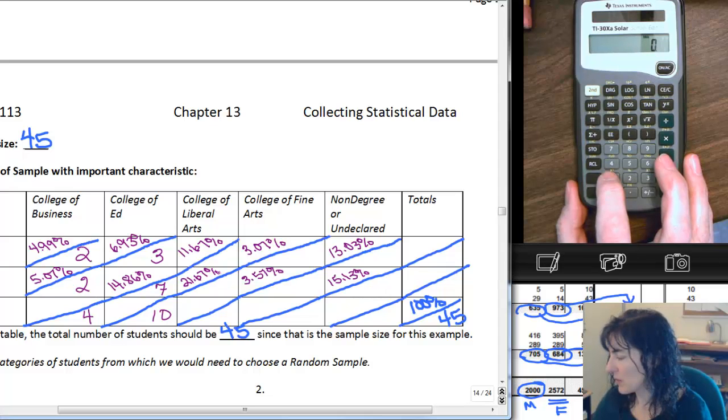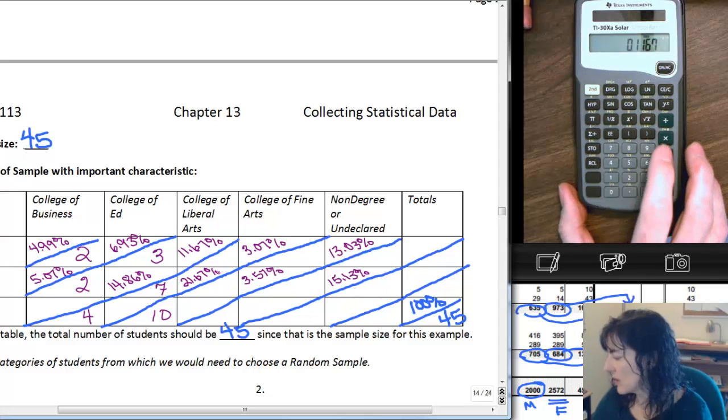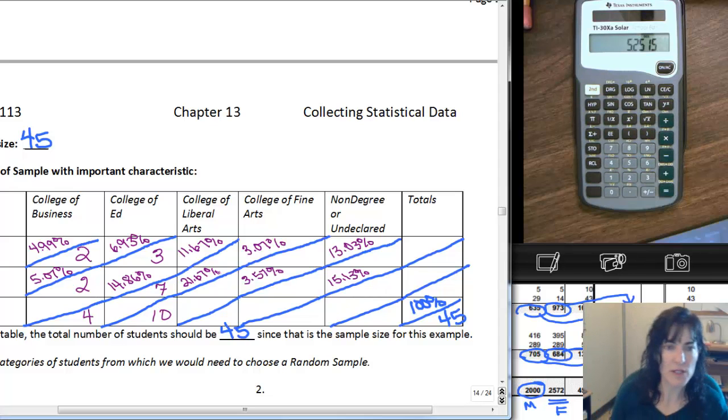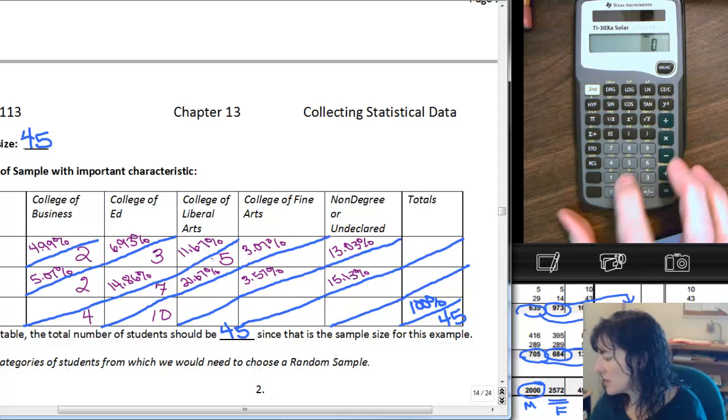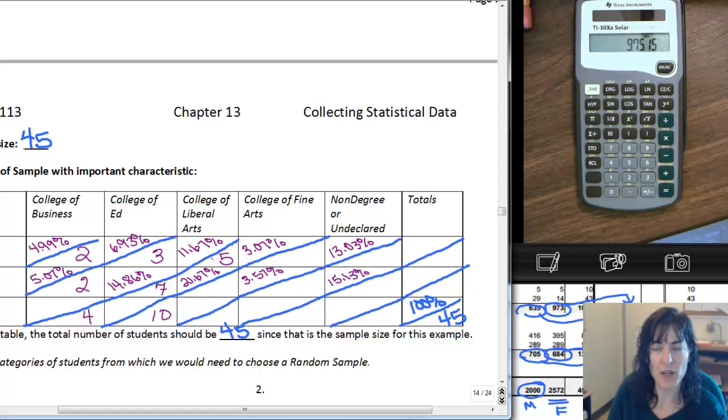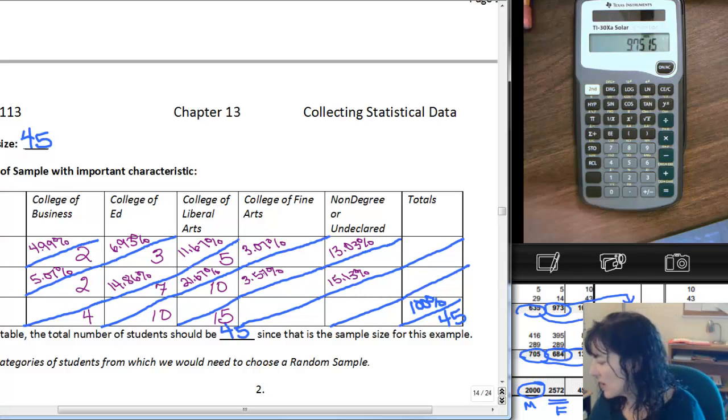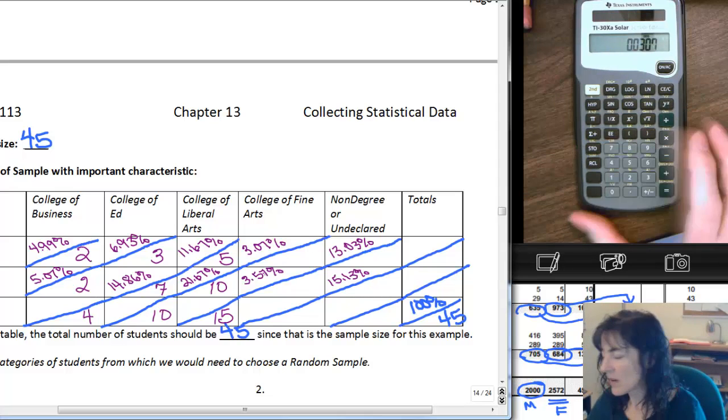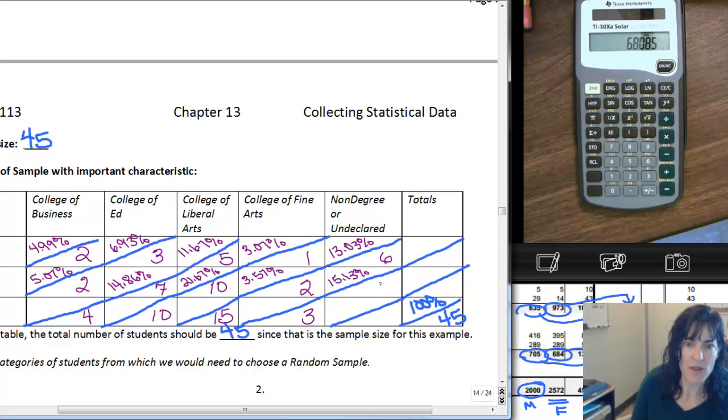Then 0.1167 times 45 for liberal arts males gives me 5. And 0.2167 times 45 is 9.75, so 10 liberal arts females. That's 15 liberal arts people total. For non-degree undeclared, I get 6.8, so 7 females, for a total of 13 non-degree undeclared.